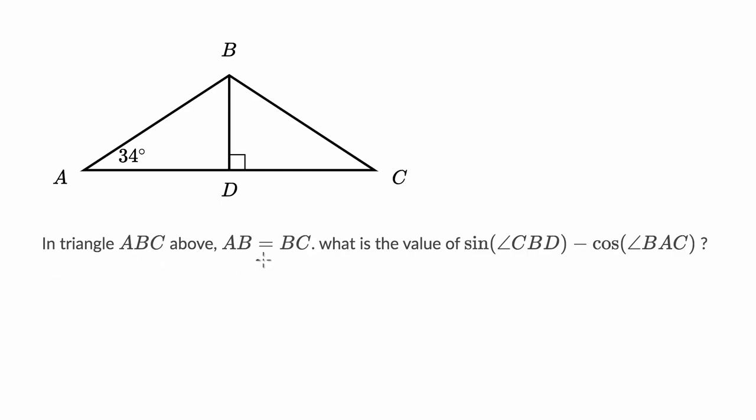In triangle ABC above, AB is equal to BC. So this is equal to that. What is the value of sine of angle CBD minus cosine of angle BAC? Pause this video and see if you can figure that out.